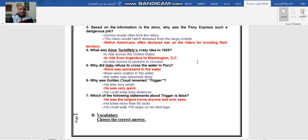Why did Gato refuse to cross the water in Peru? They wanted to cross a small creek. It was easy for the horse to cross that creek, but the horse refused. Was it a bad horse? No, it was not. That horse saved the life of Amy Schifley because there was quicksand there. We have talked about this and explained it. The quicksands are wet moving sand that are going to swallow you inside. There was quicksand in the water.